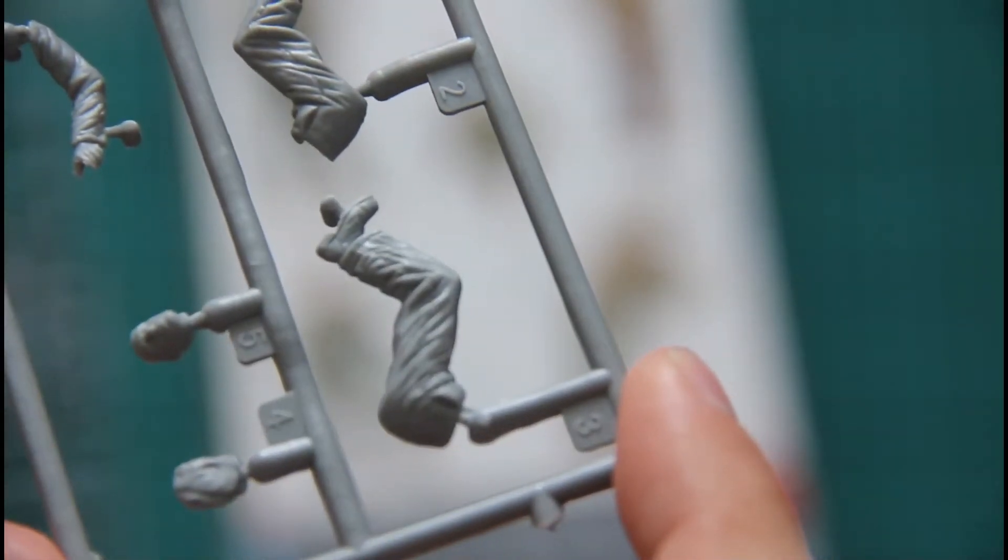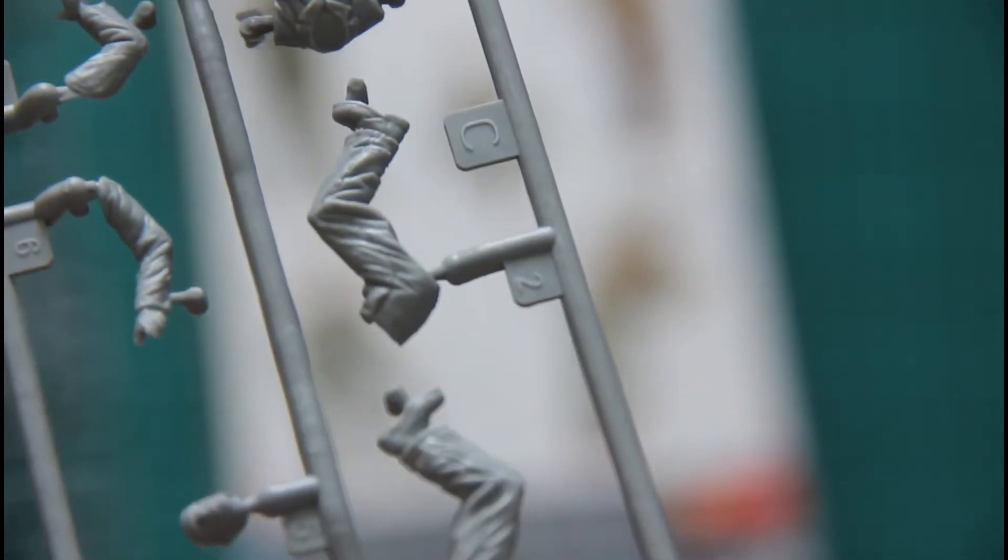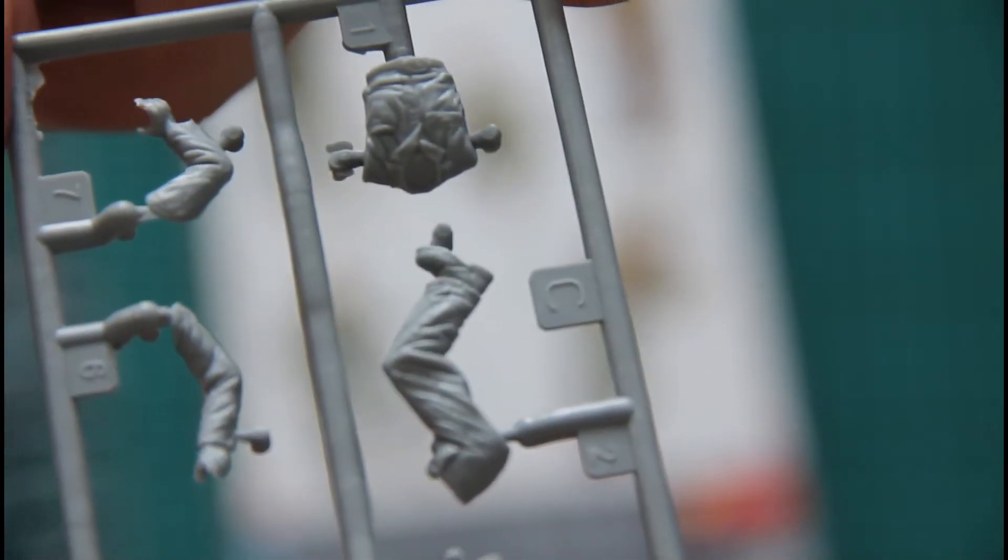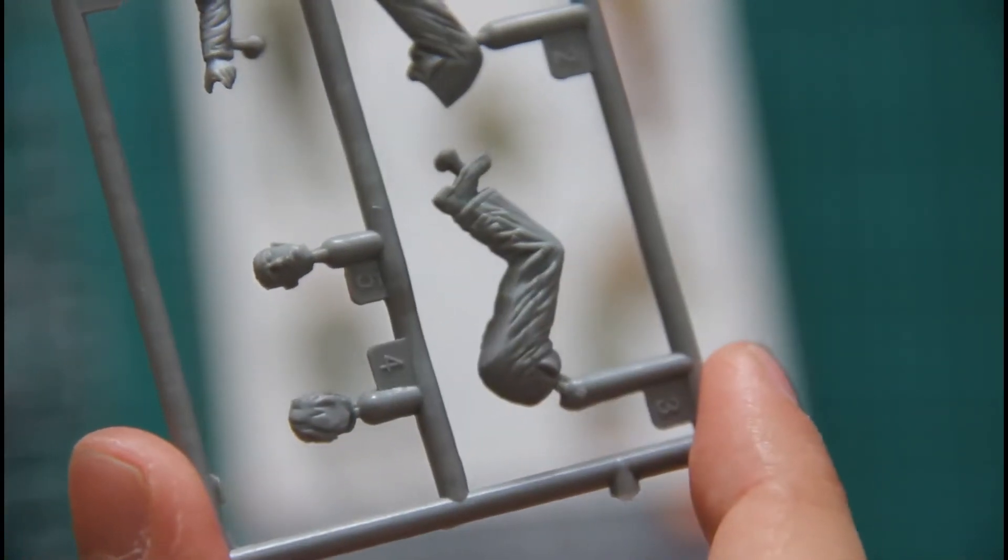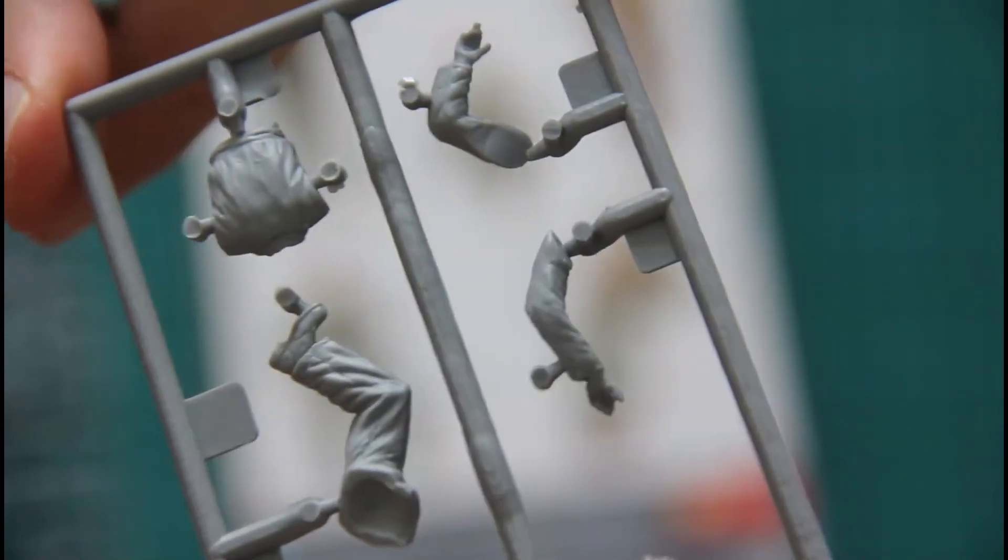Another sprue contains driver with, I guess it can be placed with steering wheel. So we have, let's say, bent legs, bent hands, torso is here and here is the head, this head. Very nice molding quality and I guess it should be easy to assemble.